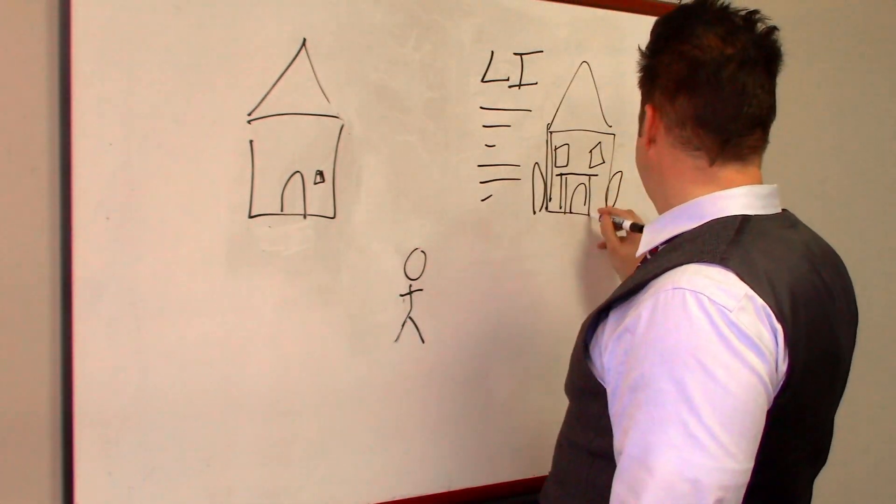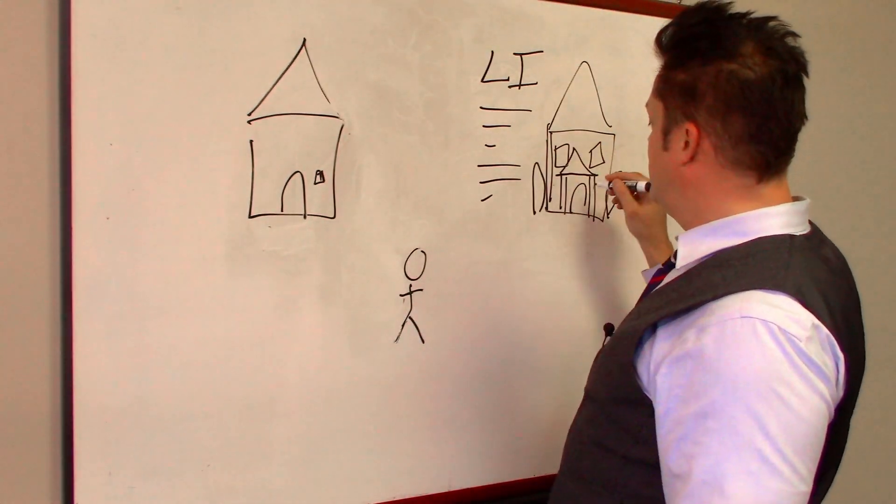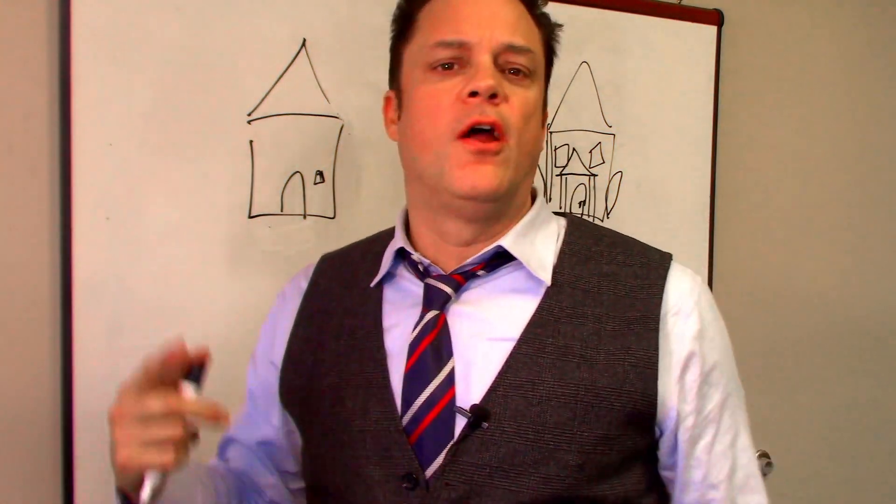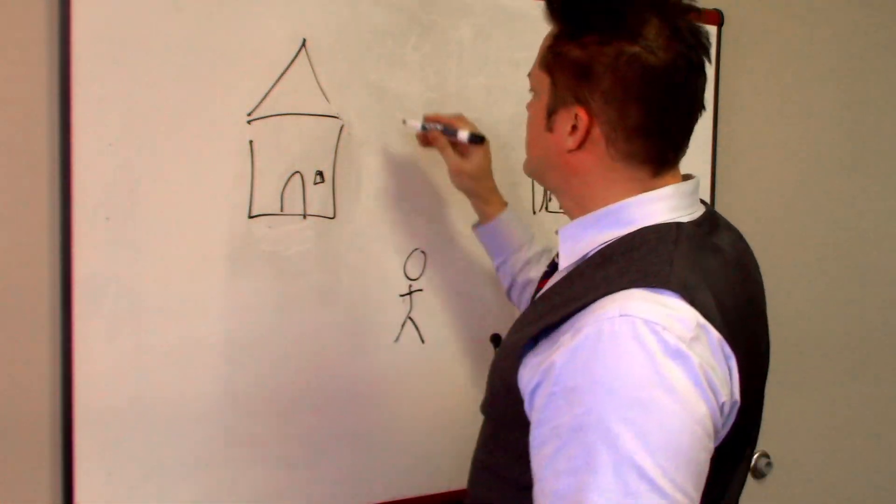So let's give him like another colonnade. His house is getting built very nicely. Look at this little entryway, and give him a doorknob now.